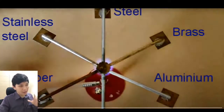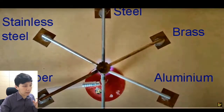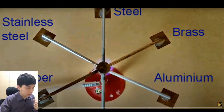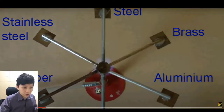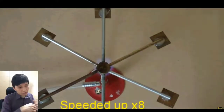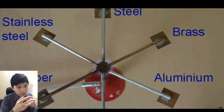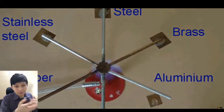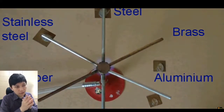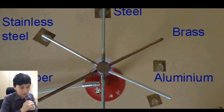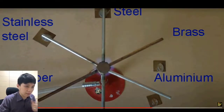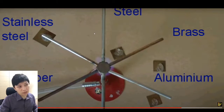Here is another setup showing how you can design an experiment to find out which kind of metal is more conductive. You can see stainless steel, copper, steel, and brass. The idea is similar to the previous video — you see which one drops first as the heat travels along the stick, melts the wax, and drops whatever is held there. Copper is the best conductor, followed by brass, aluminium, steel, and stainless steel.